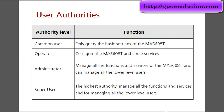There are four types of authority level in Huawei OLT. Common user can only query basic settings. Operator level can configure and troubleshoot the OLT and some other services. Administrator can manage all functions and services and manage all lower-level users. Super user is the highest authority, managing all functions, services, and lower-level users.